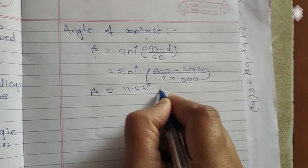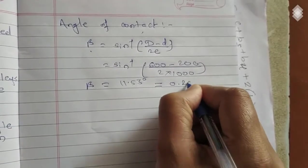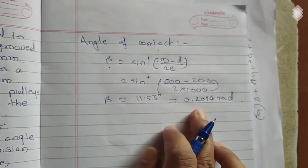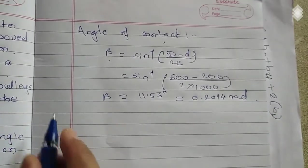But we want that value in radians. So let's convert it into radians. So it is 0.2014 radians.